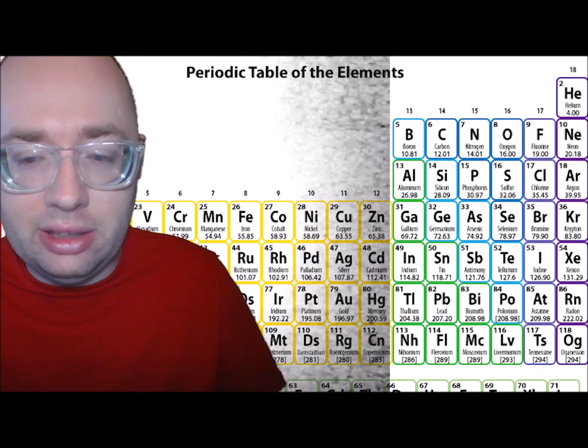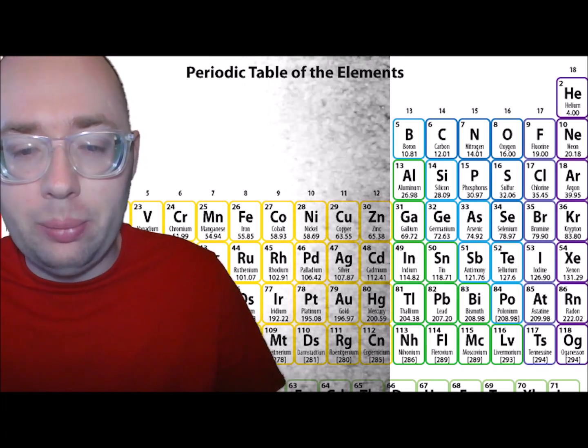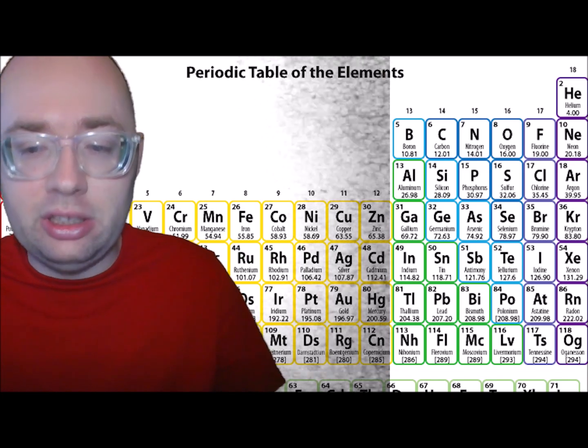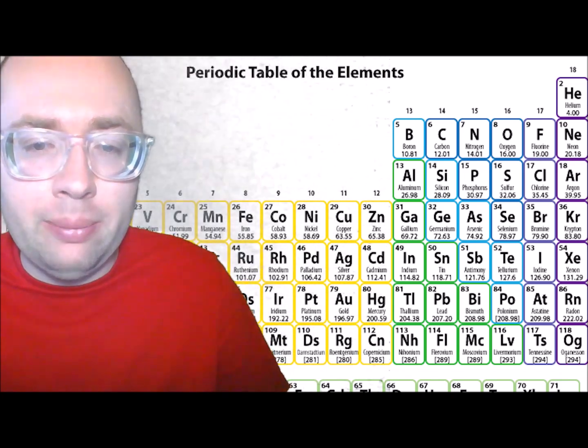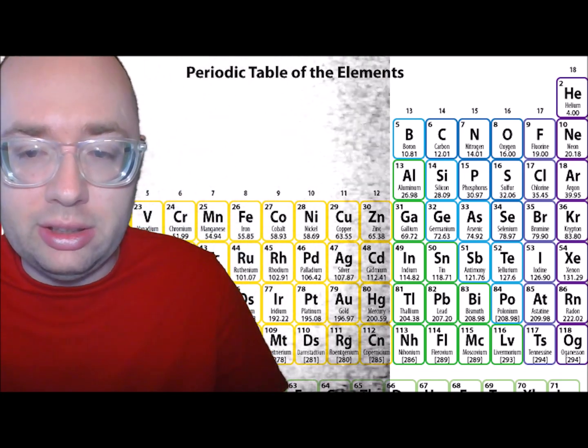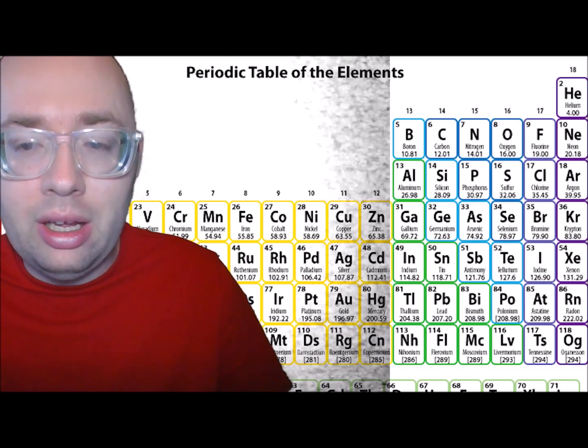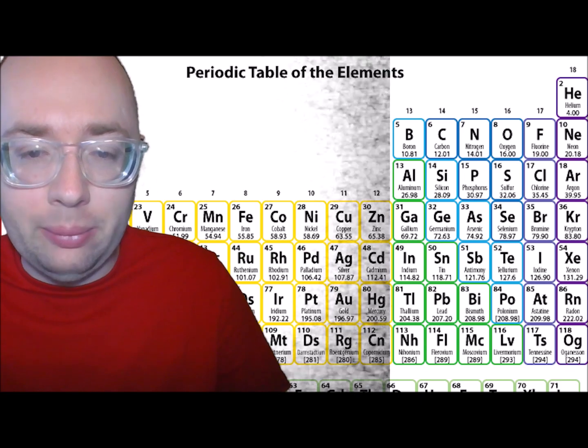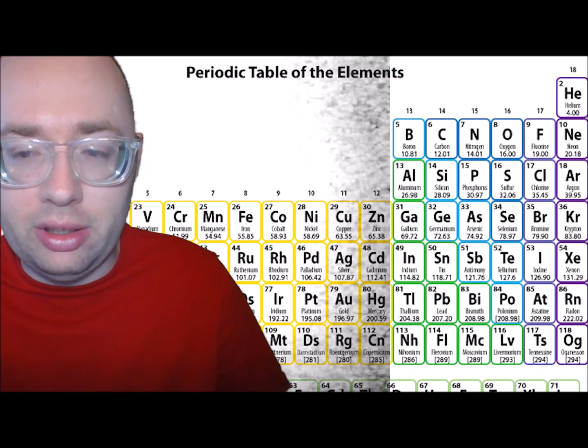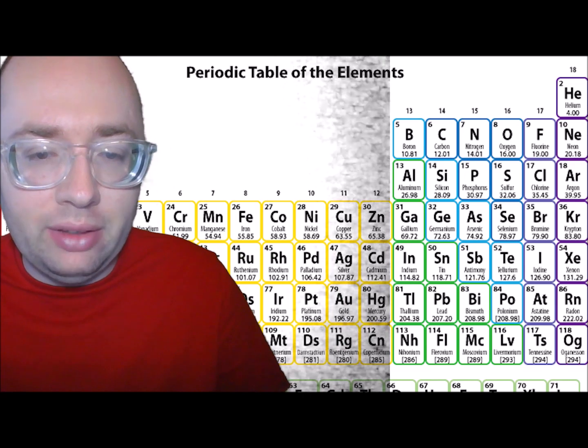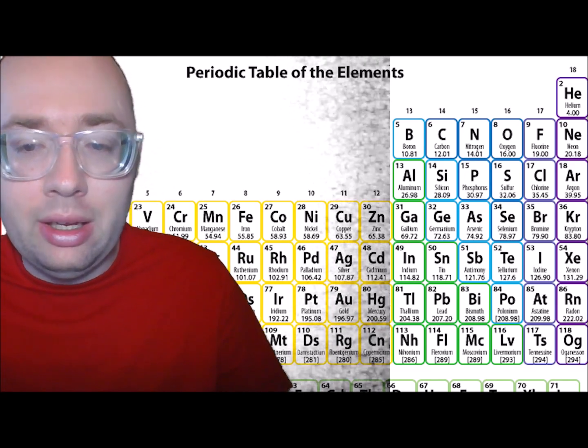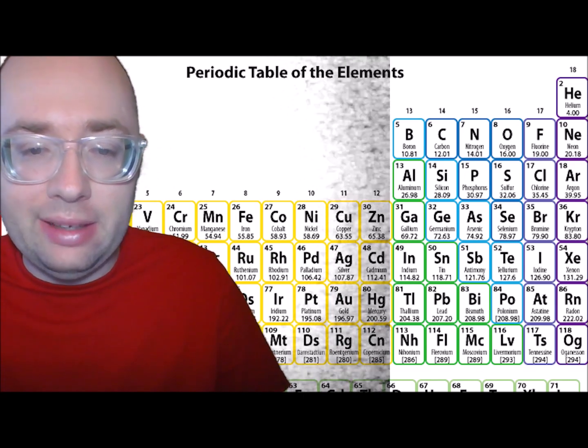The atomic number assigned to each element is important in the Periodic Table. So what does the atomic number mean? The atomic number is the number of protons in each atom. Each element has a unique atomic number. Hydrogen is the first element and has one proton, so it has an atomic number of 1. Gold has 79 protons in each atom and has an atomic number of 79.